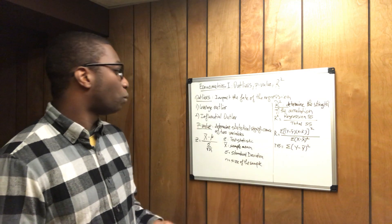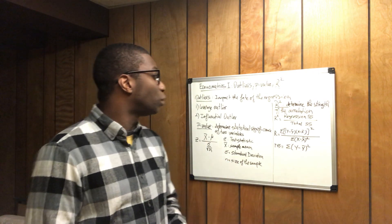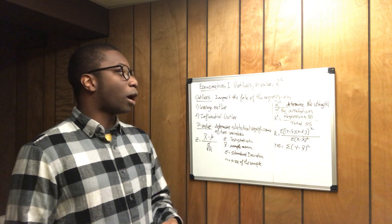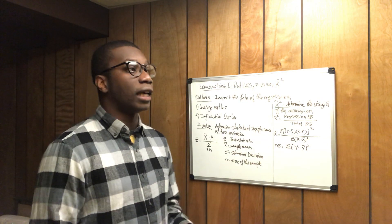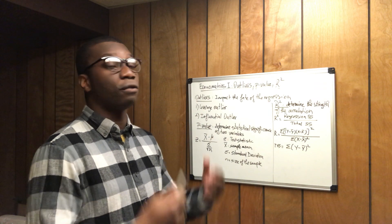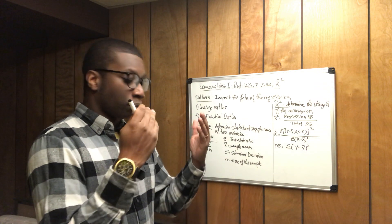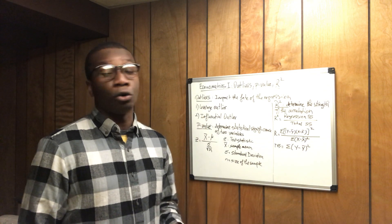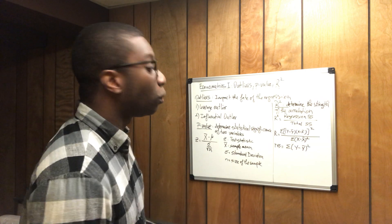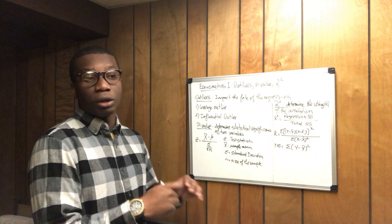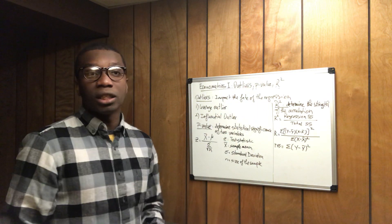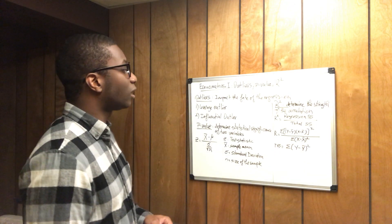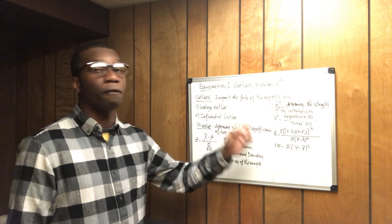Now I'm back at it, and today we're going to talk about outliers, p-value, and r-squared. These are very important because they basically determine the whole regression — whether you perform a simple regression, a multiple regression, or even an autoregressive model with time series data. Those three are quintessential to determining the regression itself.